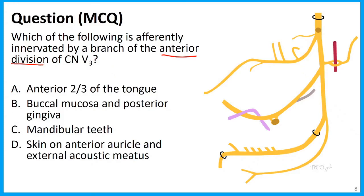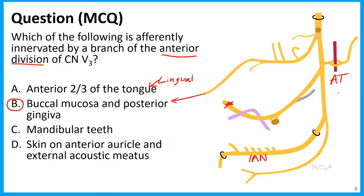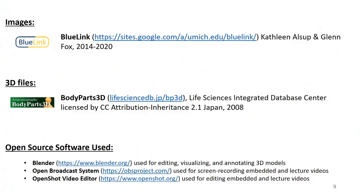The correct answer here is B — B for buccal. The buccal nerve is the termination of the anterior division of V3. All of the other branches are branches of the posterior division. The lingual nerve will innervate the anterior two-thirds of the tongue for sensation. The mandibular teeth will be innervated by the inferior alveolar nerve. And the skin of the anterior auricle and external acoustic meatus — that's the auriculotemporal nerve. I hope that makes sense. Feel free to ask questions. That's everything for this video. Thank you.